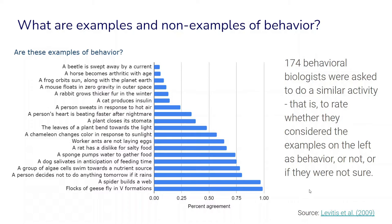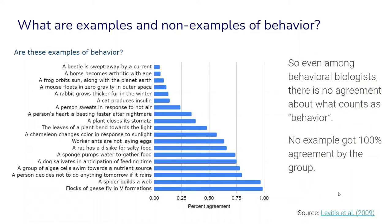These authors have asked more than 170 behavioral biologists to do a similar activity — rating a range of examples as behavior, not behavior, or uncertain. The results tell us that even among behavioral biologists, there is not much agreement about what actually counts as behavior. Some things had the most agreement, like a spider builds a web or flocks of geese fly in V-formations, but for many other examples there was really not a whole lot of agreement — no example got 100% agreement, and no example got 0% agreement.